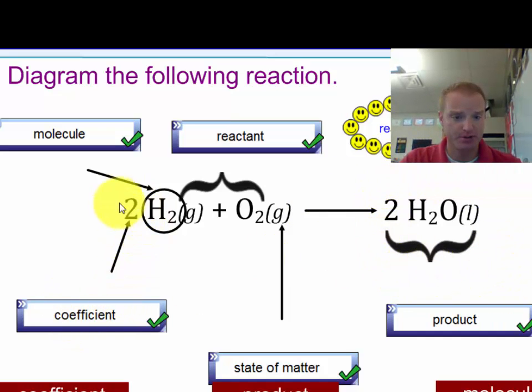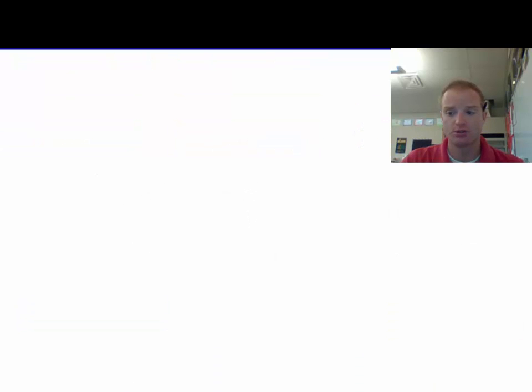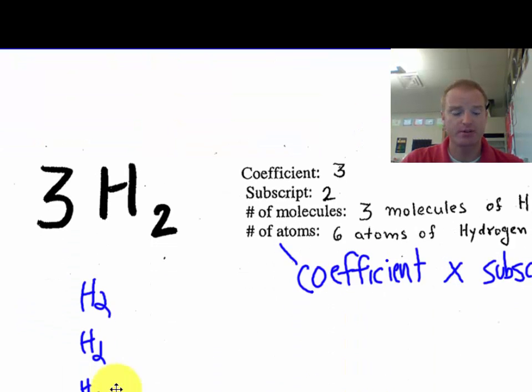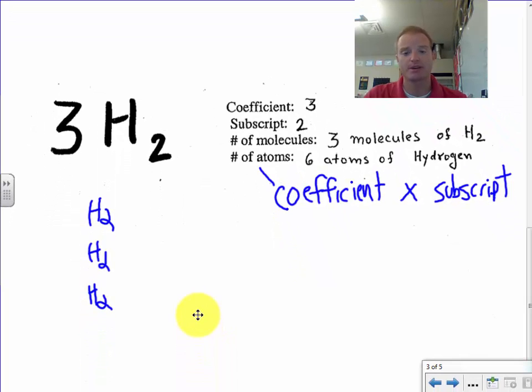You can see everything from the coefficient that would be out in front to our subscript that's down here. This is a good example. I want you to put this in your notes because this is a good example of what those parts of our chemical formulas are. So when we do this, it's another example of how we count atoms. It's all about counting atoms to make sure we've got the right number in a chemical formula. What does it all mean?